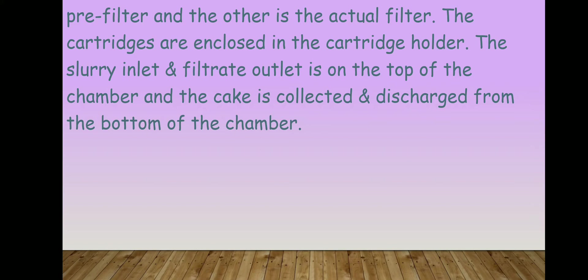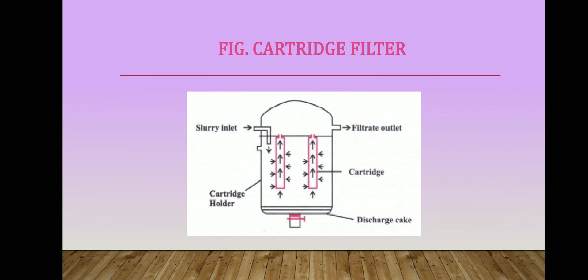There is a slurry inlet and a filtrate outlet on both sides. On the other side you can collect your cake, meaning all the dust particles or undesirable particles that are not able to pass through the filter. The solid residue is discharged from the bottom of the chamber. Looking at the diagram: your slurry inlet is on top, and you can see the filtrate outlet and the cartridge — the pink colored border is the cartridge.